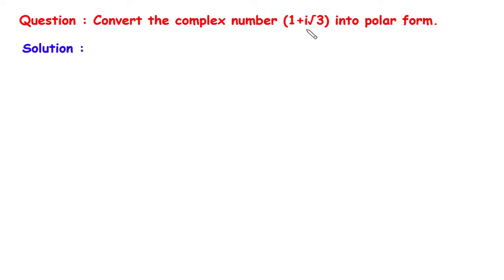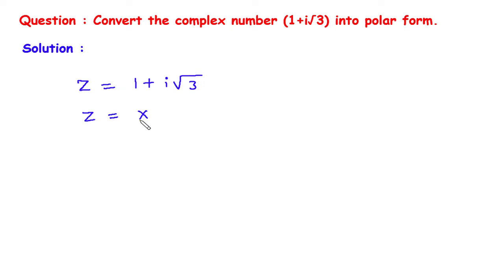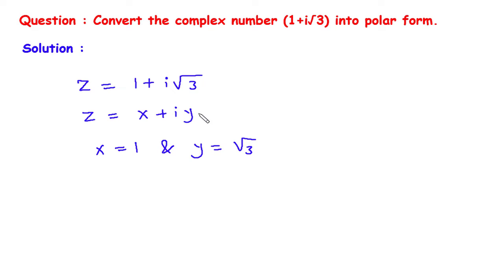Convert the complex number 1 plus i root 3 into polar form. Suppose z is the complex number and it is equal to 1 plus i root 3. We can compare this equation with z is equal to x plus i y. Here we can see x is equal to 1 and y is equal to root 3. This x is the real part and this y is the imaginary part, so 1 is the real part and root 3 is the imaginary part.